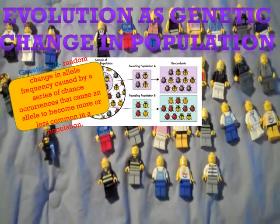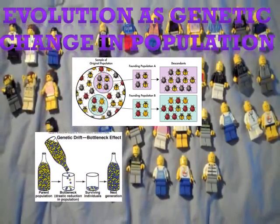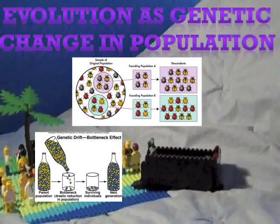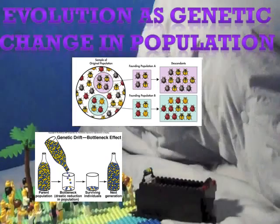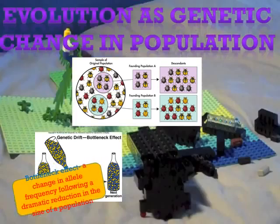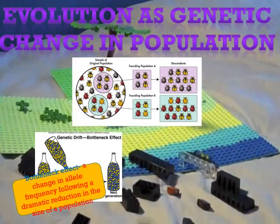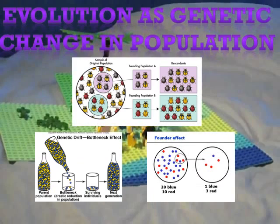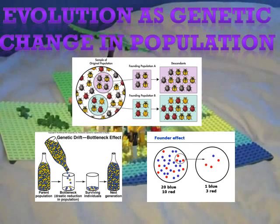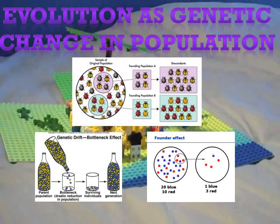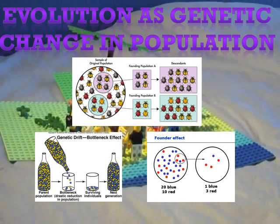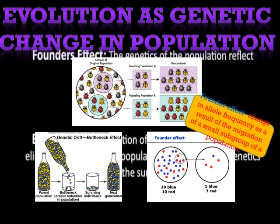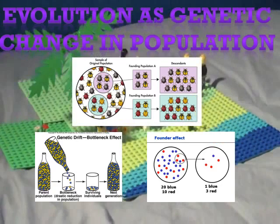Sometimes a disaster such as disease can kill many individuals in a population. Just by chance, the smaller population's gene pool might have allele frequencies different from those of the original gene pool. If the reduced population later grows, its allele frequencies will differ from the original. This is called the bottleneck effect — a change in allele frequency following a dramatic reduction in population size. Genetic drift can also occur when a few individuals colonize a new habitat; if their allele frequencies differ from the main population by chance, this is known as the founder effect.